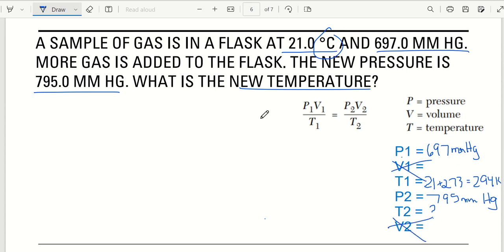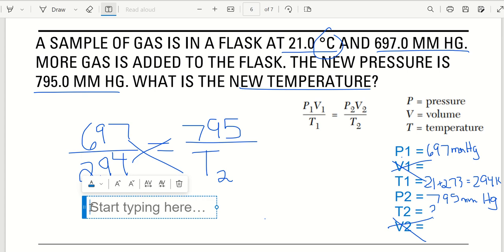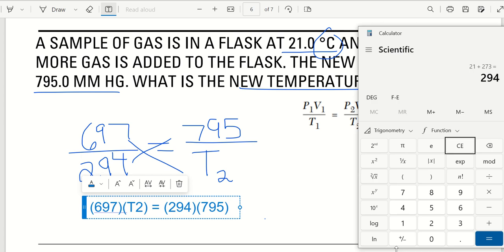Do not use it. So now plug in what you know. I know 697 over 294 equals 795 over T2. I could say x. So let's just think logically. What happened? Did the pressure go up? Yes, it did. So what should the temperature do? Go up. So we cross multiply. And what do we get when we do that?